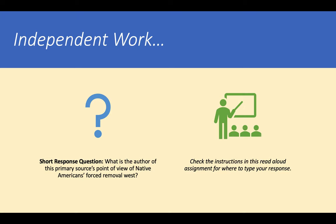For your independent work today, you're going to be answering the short response question: What is the author of this primary source's point of view of the Native Americans' forced removal west? You can check the instructions in this read-aloud assignment for where to type your response — your teacher might have put a Google form or a Google doc. Don't forget to include two pieces of text evidence.